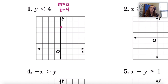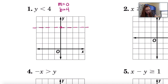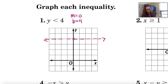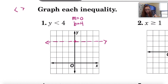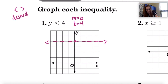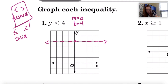Now for this one, if it's an inequality, this one is going to be a dotted or dashed line. Anytime you have the less than or the greater than symbol in an inequality that you're graphing, your line would be dashed. If you have the less than or equal to or the greater than or equal to sign, then you're going to have a solid line.